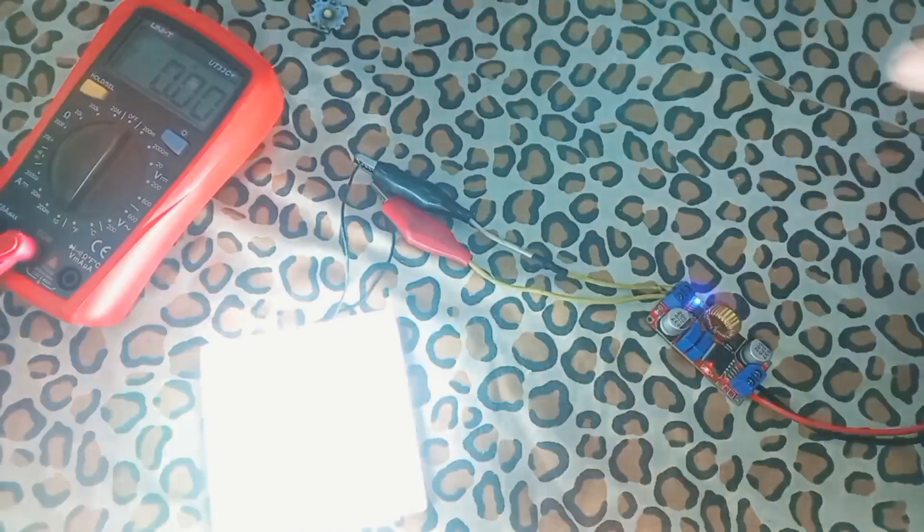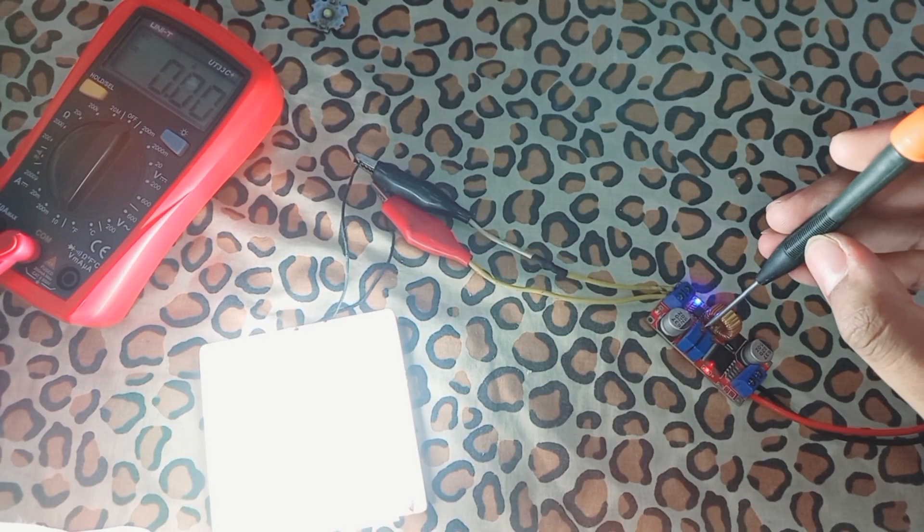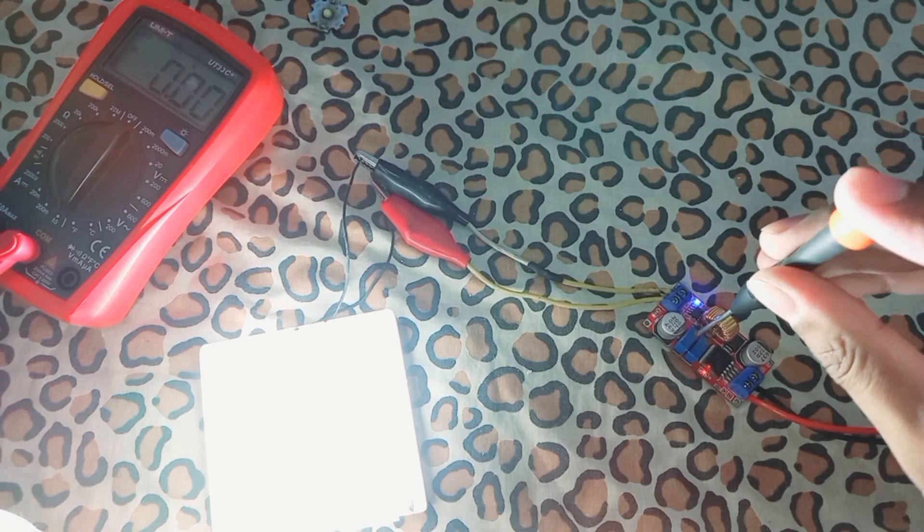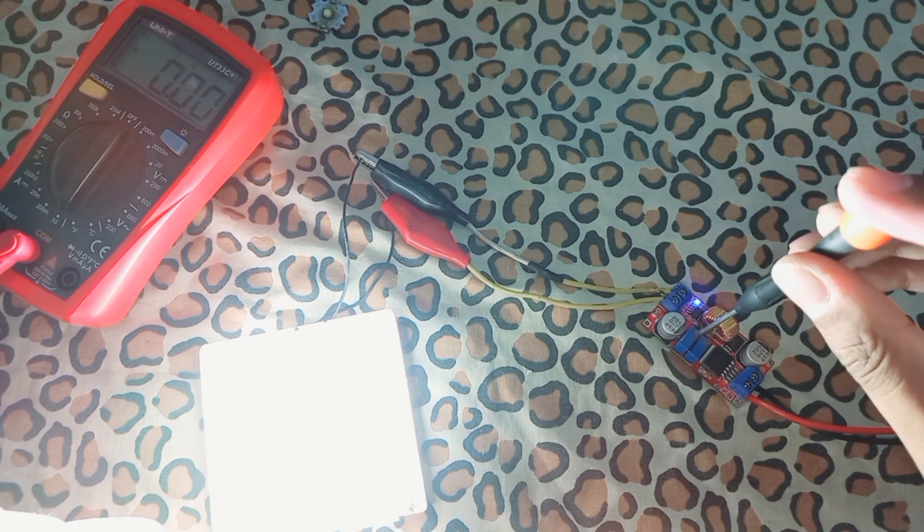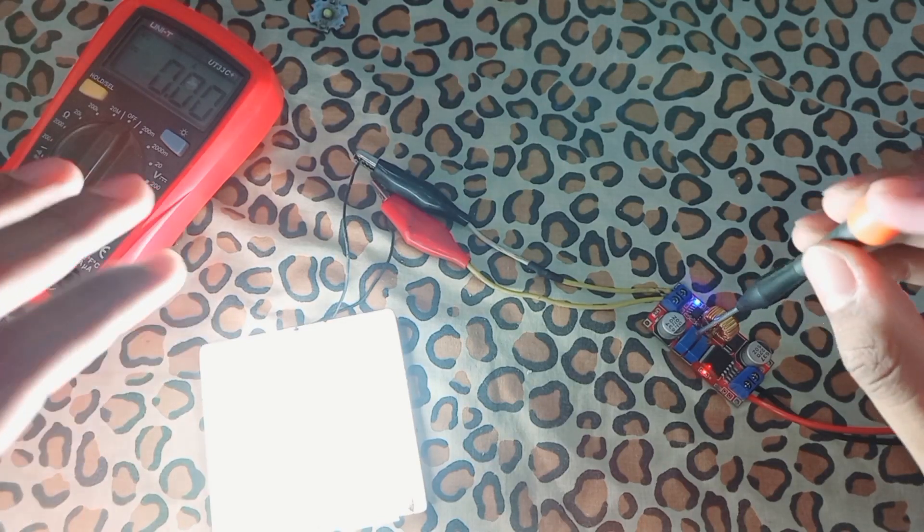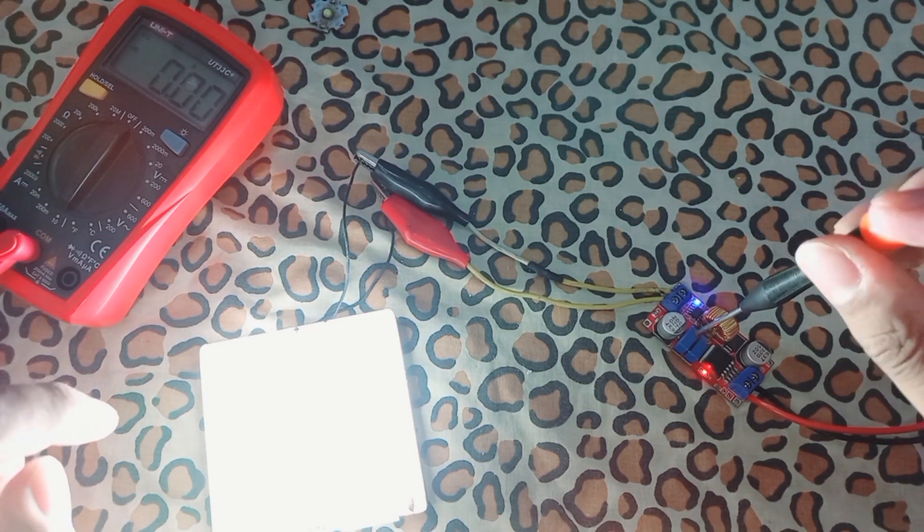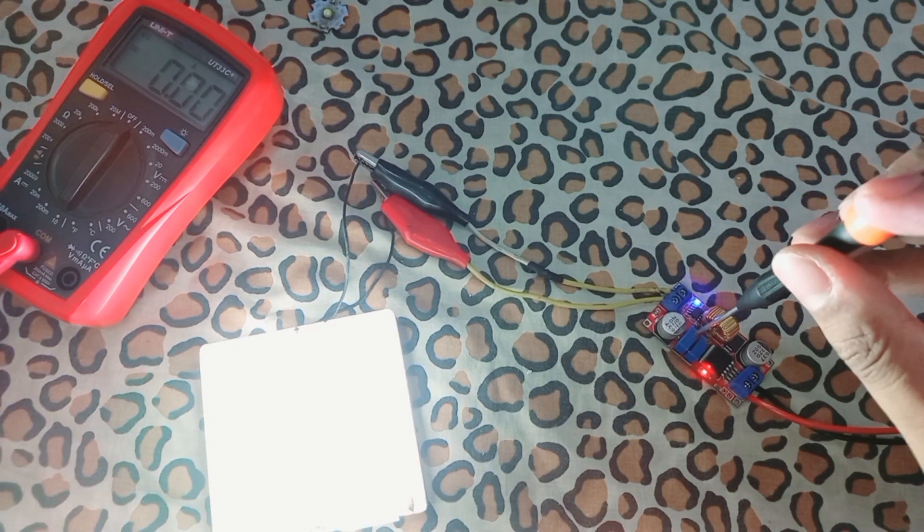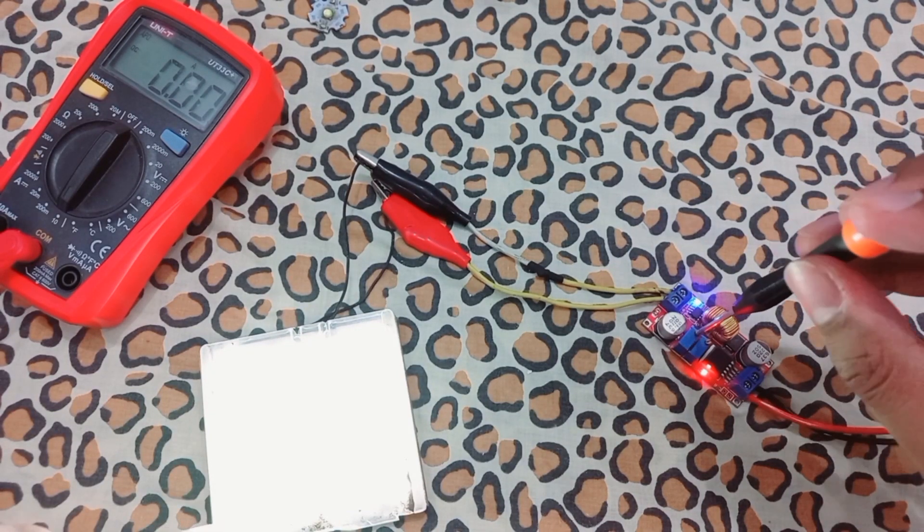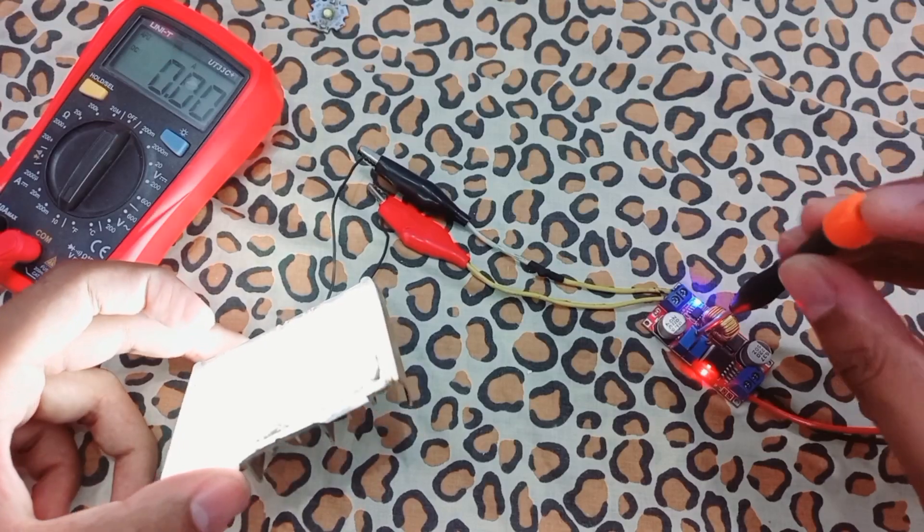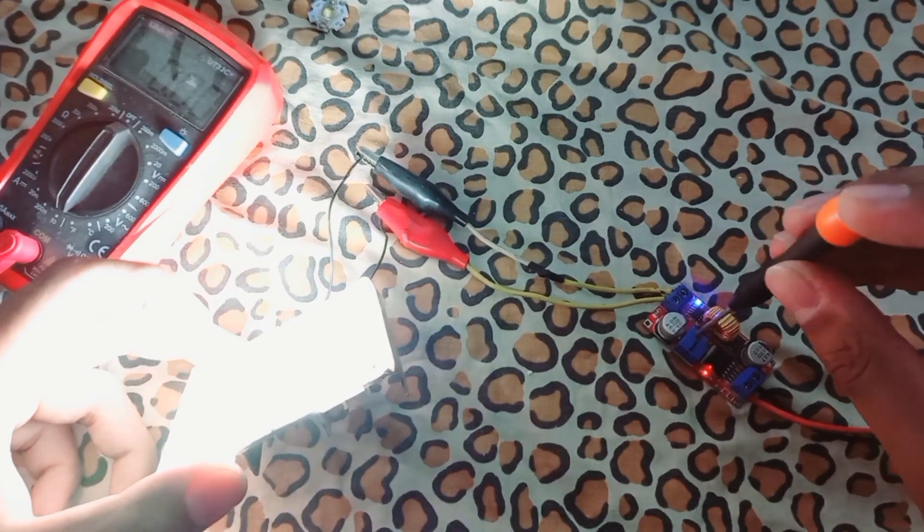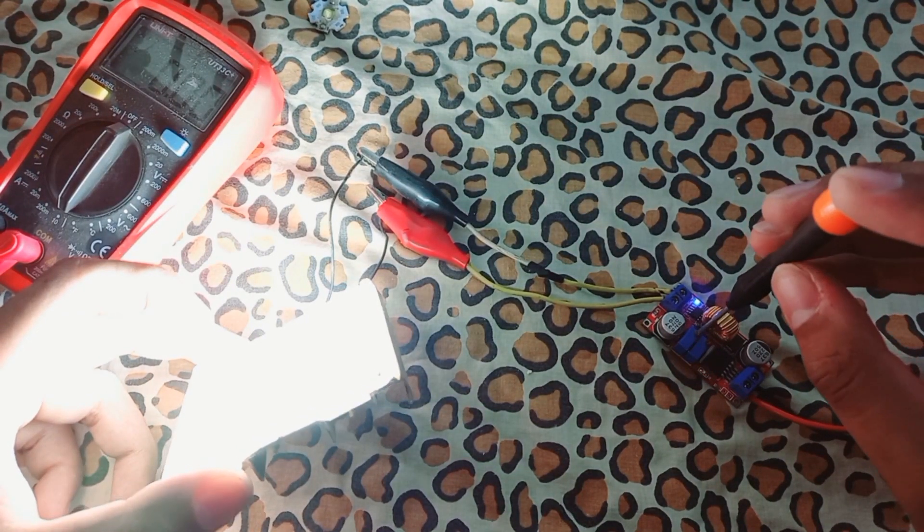As you can see, this LED strip is glowing. If we slowly increase the current by rotating this, we can see the increased brightness of it. By rotating the current potentiometer, the brightness of the LED drops. If I increase it, increasing current increases the brightness of the LED.